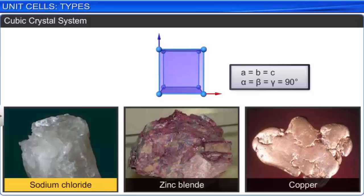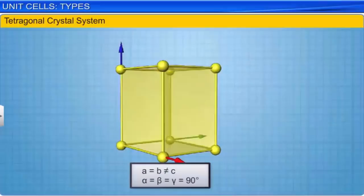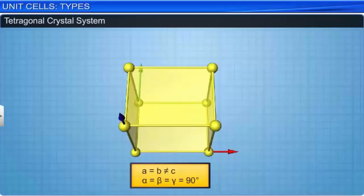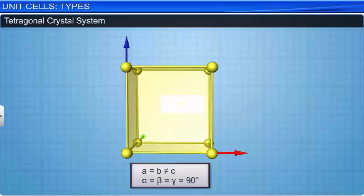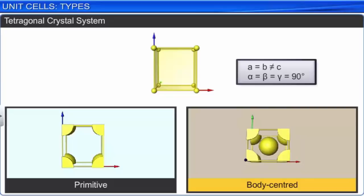In a tetragonal crystal system, the three axes are at right angles to each other, but only two are equal. The possible lattices are primitive and body-centered. Calcium sulfate and titanium dioxide are examples.